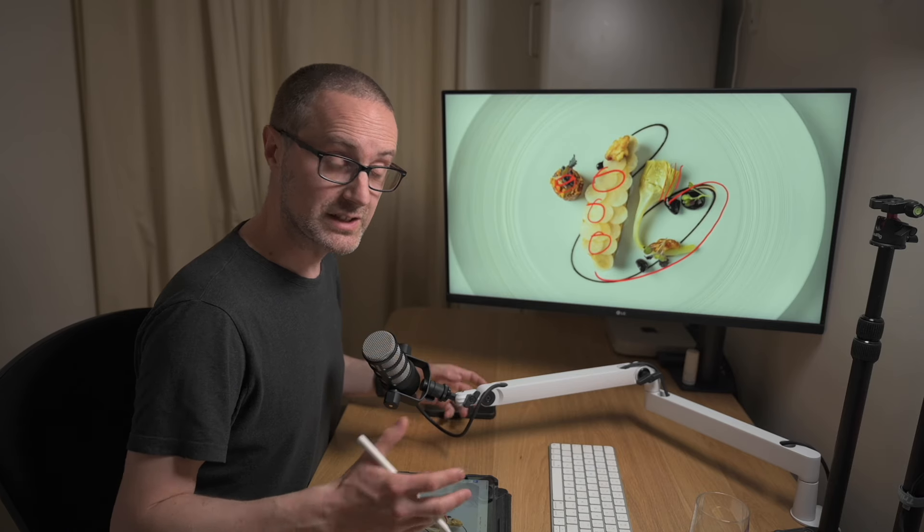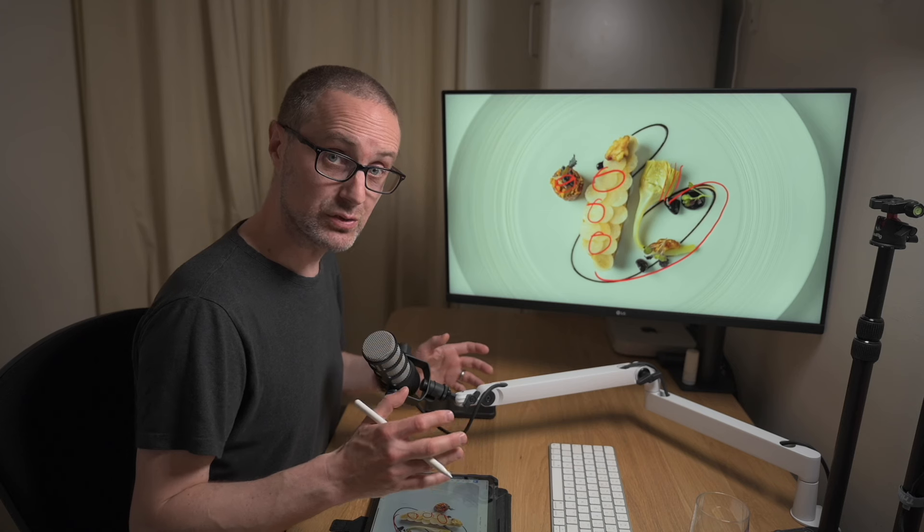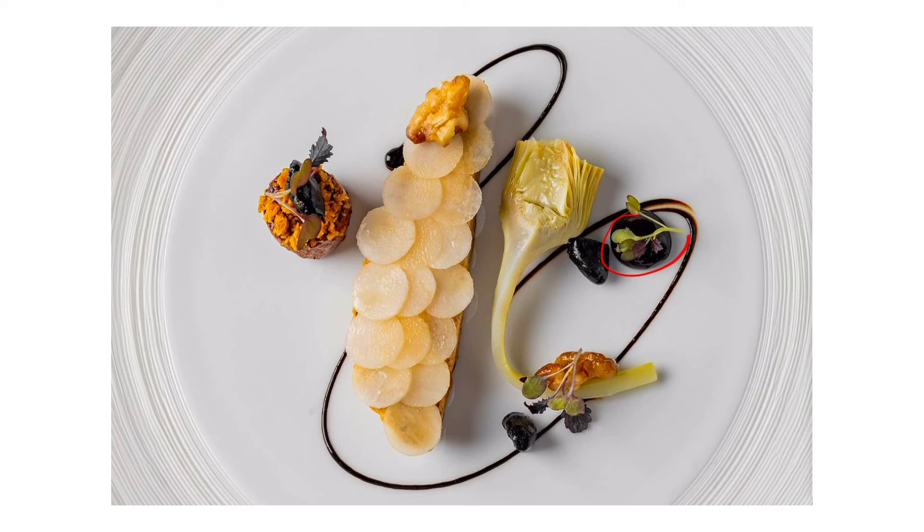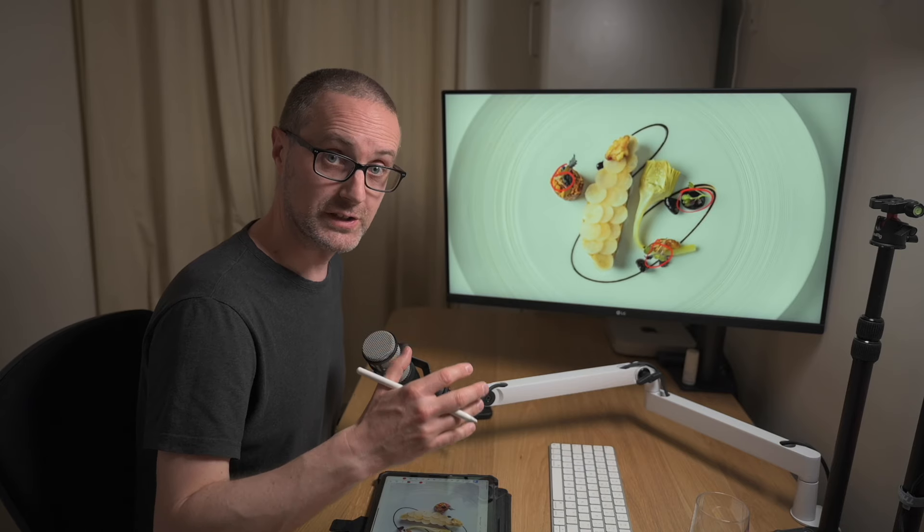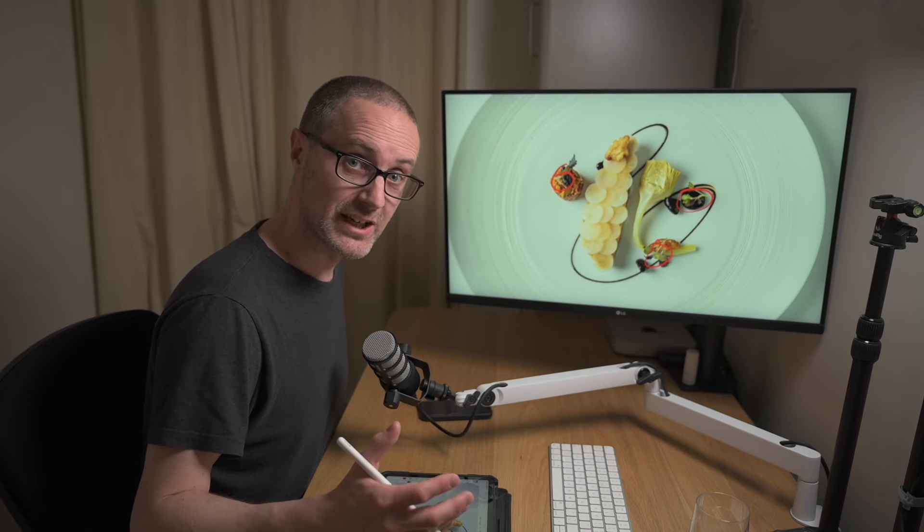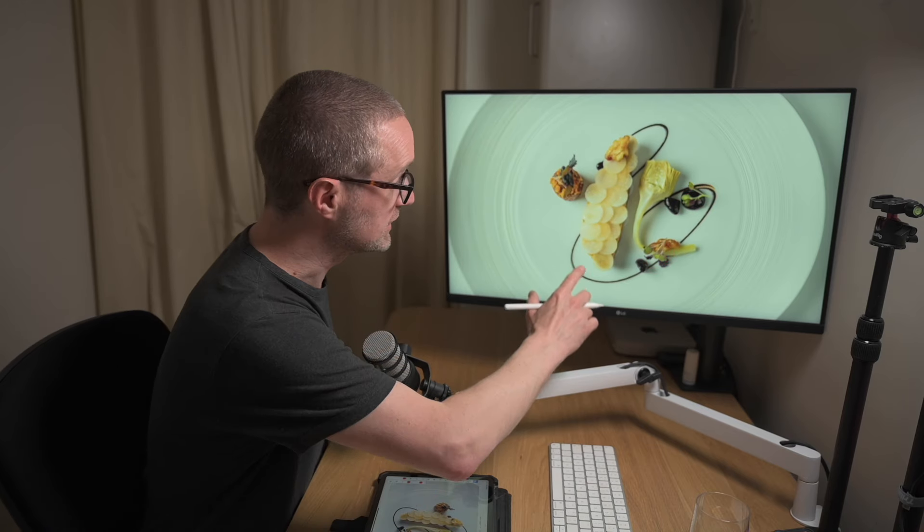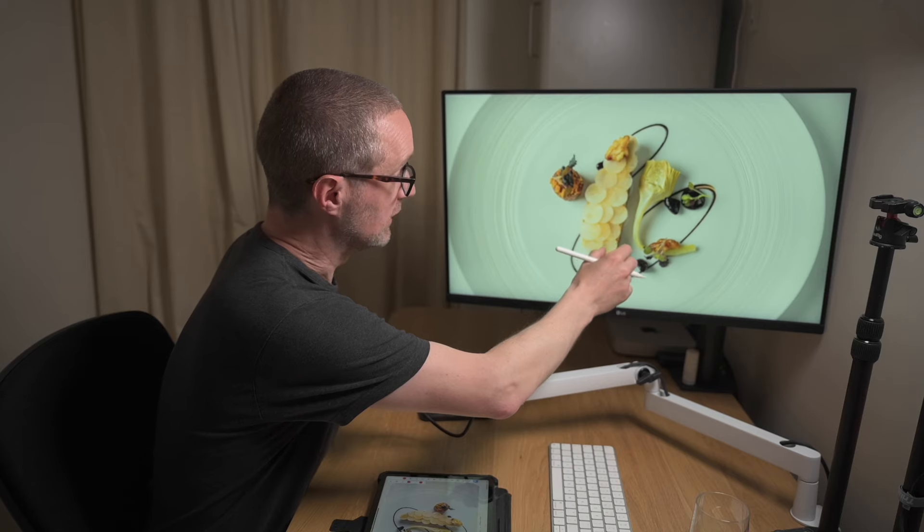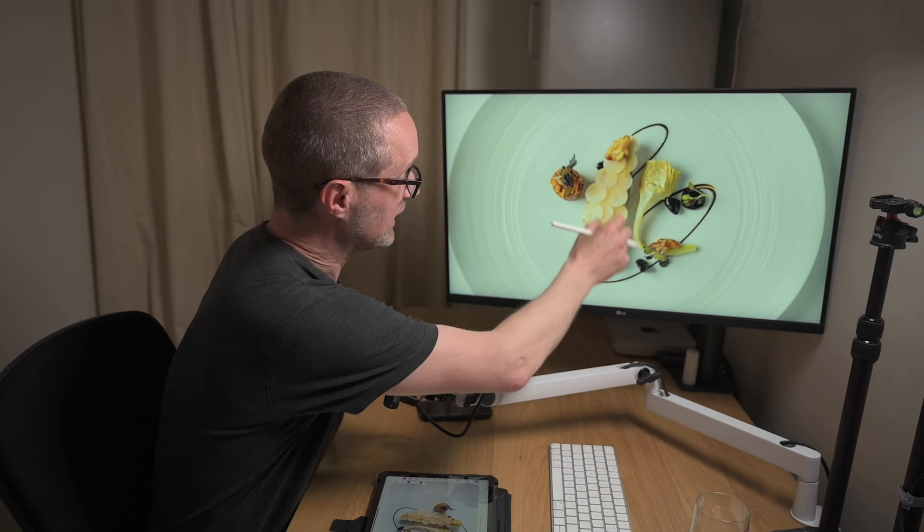The muted tones continue actually into the garnishing as well. The garnishing here, here, and here—usually a lot of garnishes add a lot of contrast and a lot of pop to a dish, but here he's used the same muted tones as well, so it hasn't taken away from the color palette whatsoever.